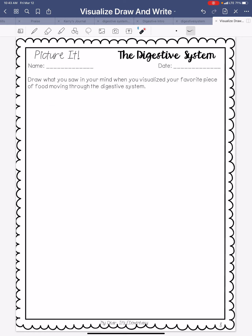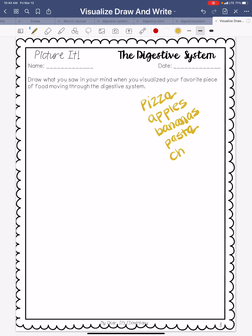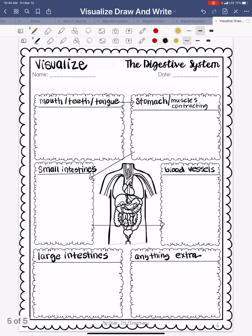On here, I want you to tell me what is your favorite food that you pictured moving through the digestive system. Mine — pizza, apples, bananas, pasta, cheese — I could go on and on. Those are some of my favorite foods. And then, once you have drawn what you visualized, I want you to come over to this page and write out what happens in the mouth — the teeth and the tongue — what happens in the stomach when the muscles are contracting, what happens in the small intestine, what do the blood vessels do, the large intestine, and anything extra that you need to write there.